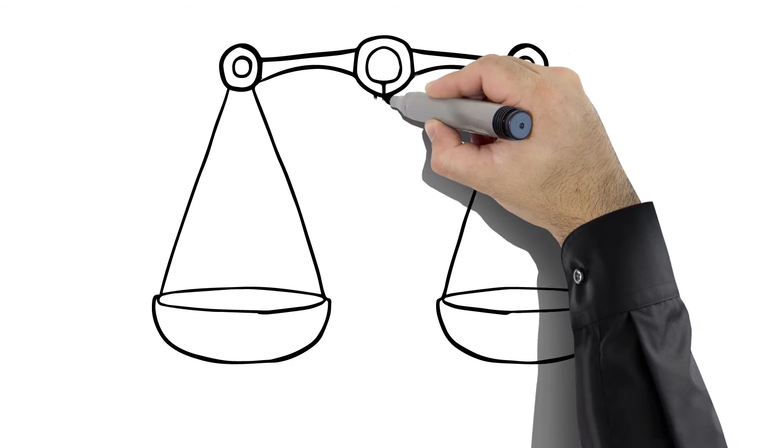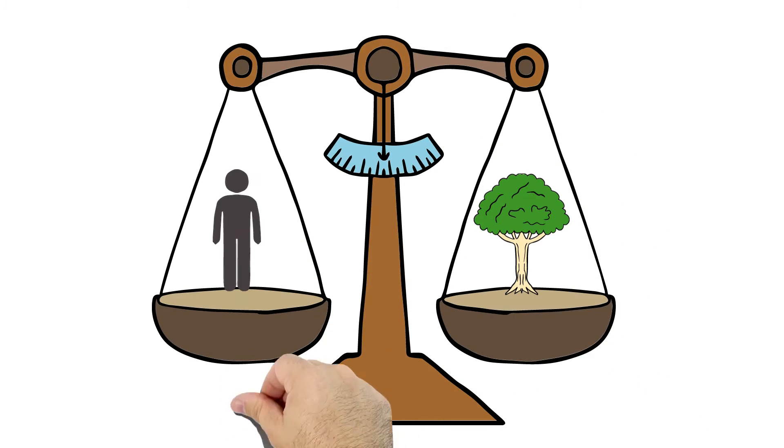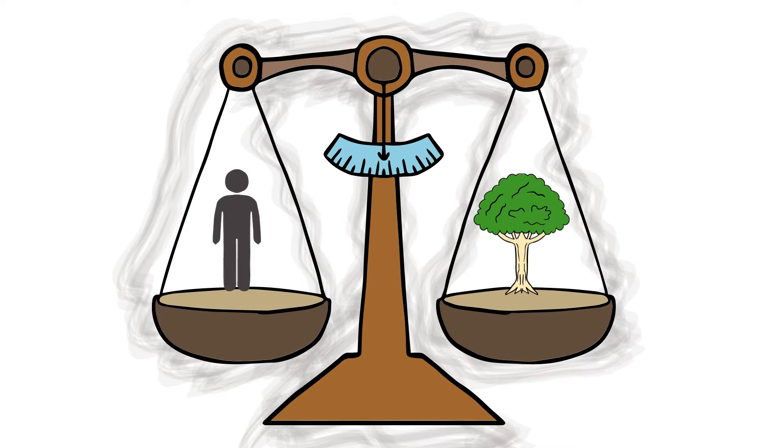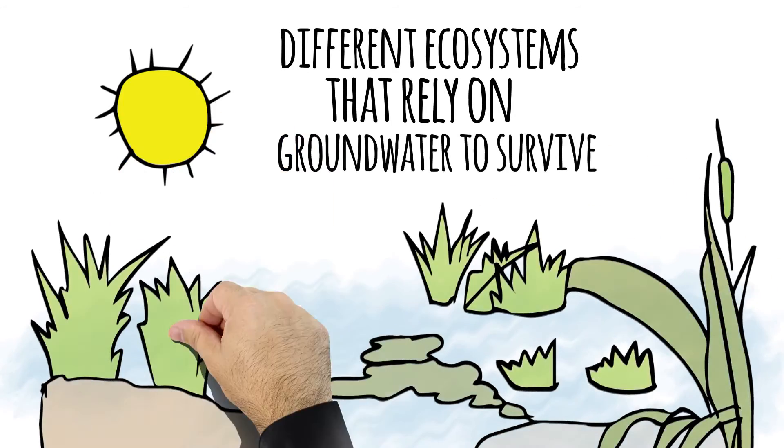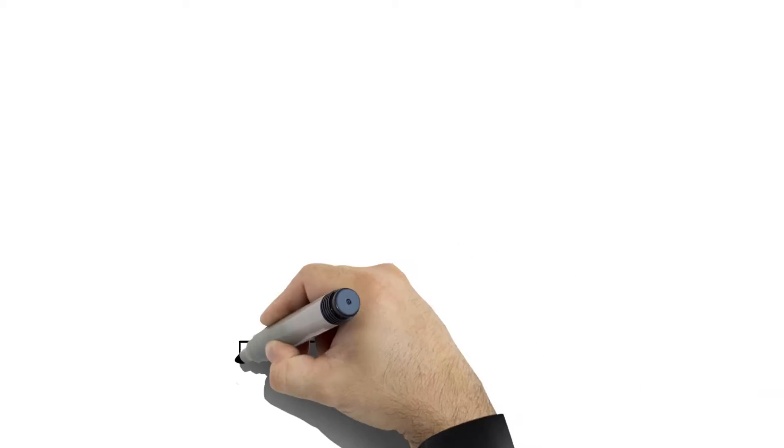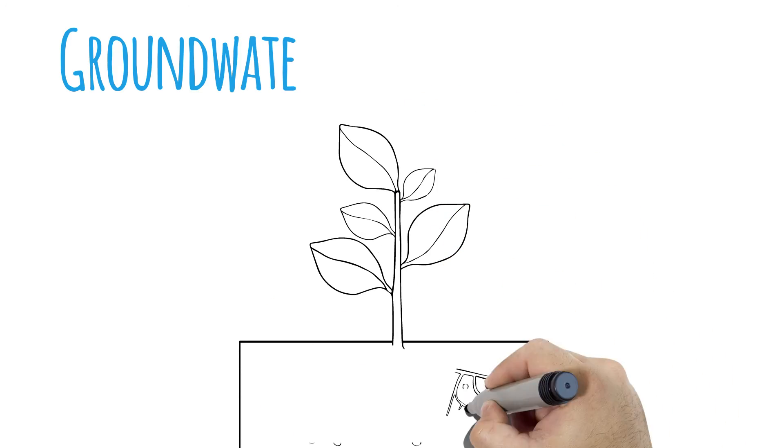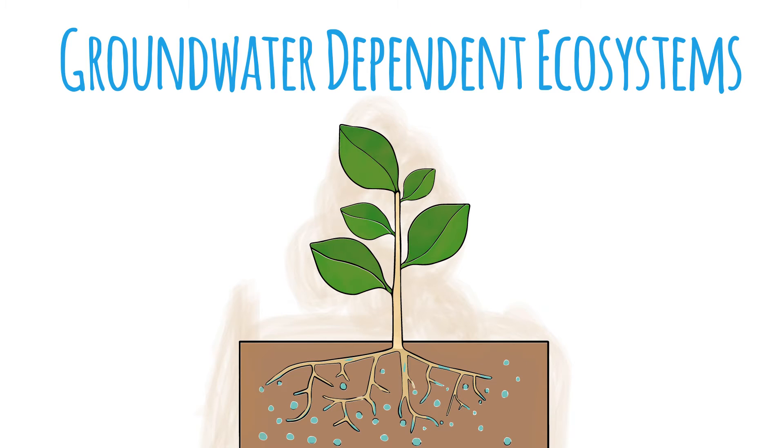One of the most important roles of the WAP is to provide a balance between water available for human use and water available to the environment. There are a range of different ecosystems that rely on groundwater to survive. These are known as groundwater dependent ecosystems, or GDEs for short.